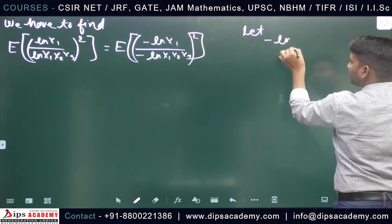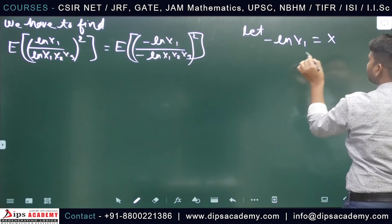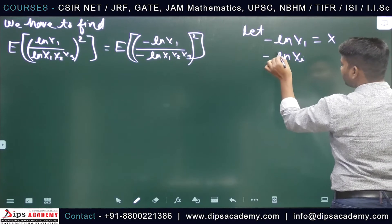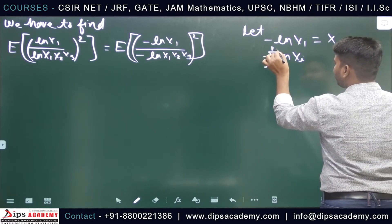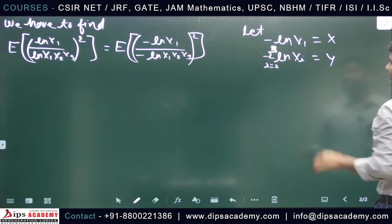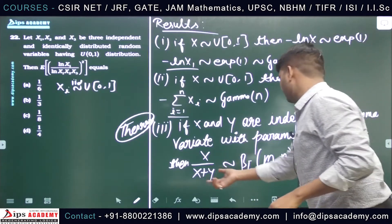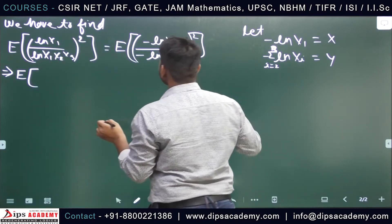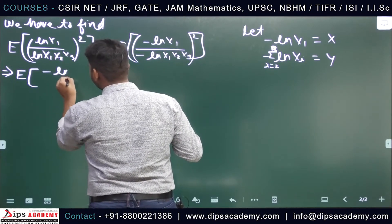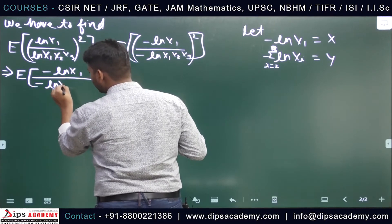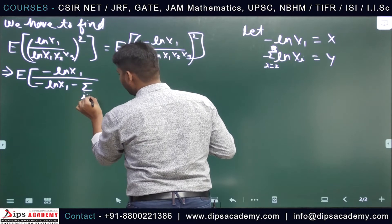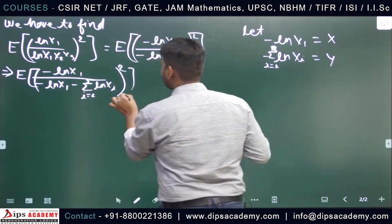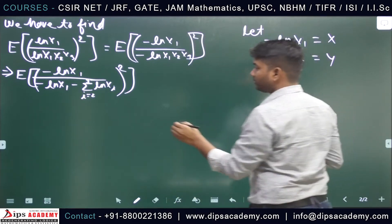Let minus ln(X1) equal X, and let minus ln(Xi) for i from 2 to 3 equal Y. We can write the expectation as E[minus ln(X1) divided by minus ln(X1) plus the sum of minus ln(Xi) for i from 2 to 3], whole square — which is E[X/(X+Y)]².